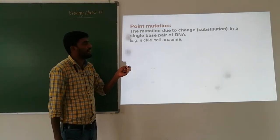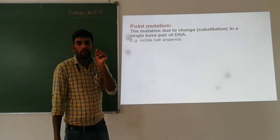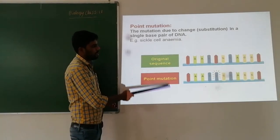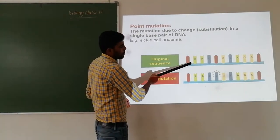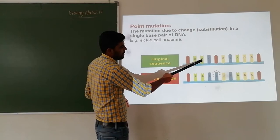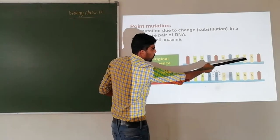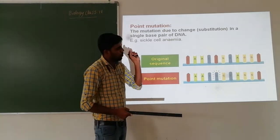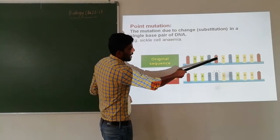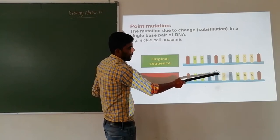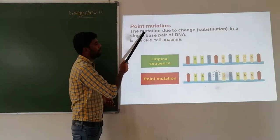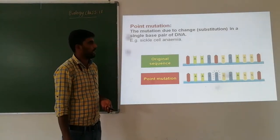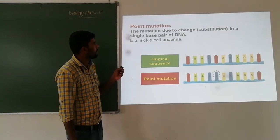Point mutation means mutation where changes occur in a single nucleotide base pair of DNA — only one nucleotide base pair changes. Such changes are called point mutation. The best example is sickle cell anemia. The disease occurs due to only one nucleotide base sequence change — for example, thymine is replaced by cytosine. This one change in base pair causes several effects.